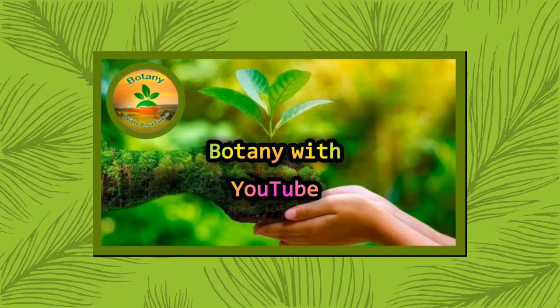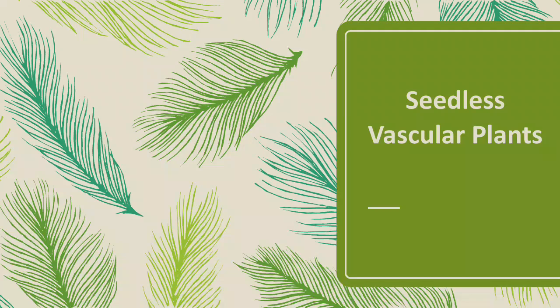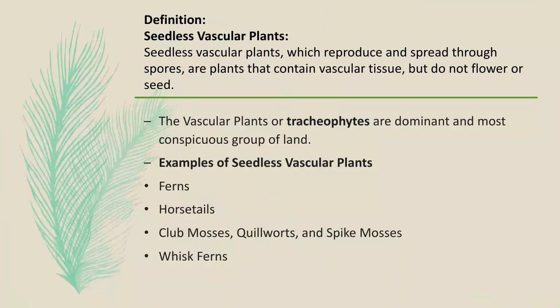Welcome to our channel Botany with YouTube. Today I'm going to present a topic: seedless vascular plants. Seedless vascular plants reproduce through spores and contain vascular tissues but do not flower or produce seeds. The vascular plants, or tracheophytes, are dominant and the most conspicuous group of land plants. Examples of seedless vascular plants are ferns, horsetails, club mosses, quillworts, spike mosses, and whisk ferns.